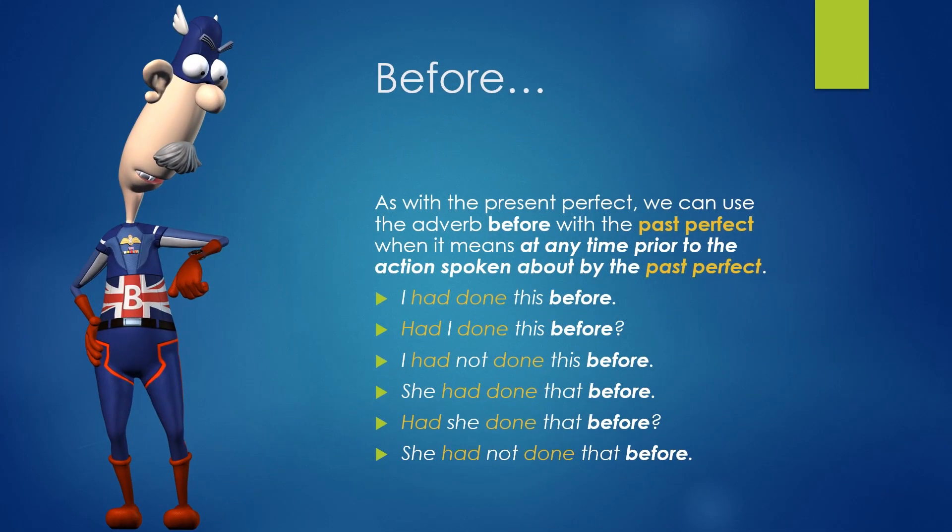Before. As with the present perfect, we can use the adverb before with the past perfect, when it means at any time prior to the action spoken about by the past perfect. I had done this before. Had I done this before? I had not done this before. She had done that before. Had she done that before? She had not done that before.